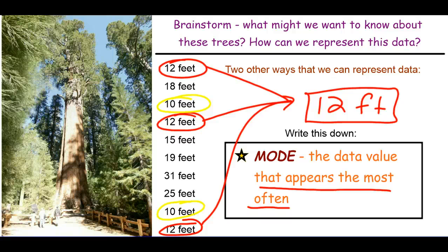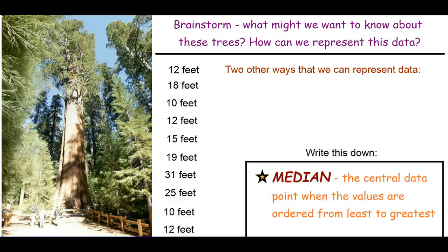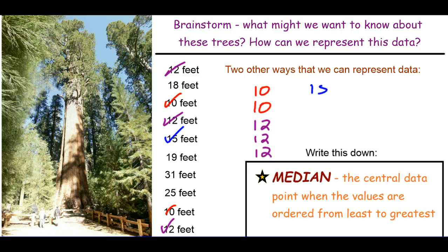Another way of finding the middle value is called the median. To find the median, we have to put the values in order from least to greatest, because we want there to be only one median for a set of data. Ordering from least to greatest: two trees of 10 feet, three trees of 12 feet, then a tree of 15, a tree of 18, a tree of 19, a tree of 25, and a tree of 31.